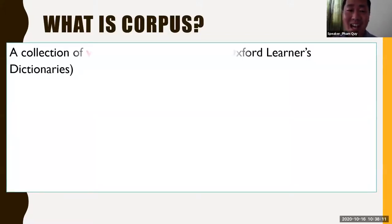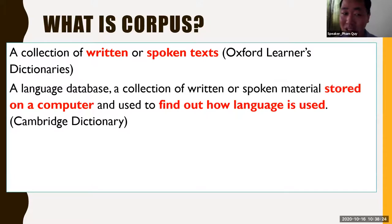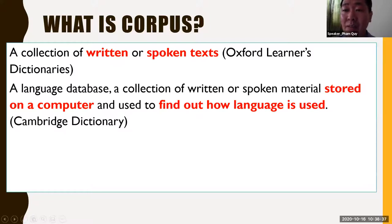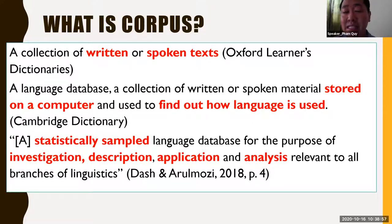What is a corpus? First, I want to present some dictionary definitions. According to a learner dictionary, a corpus is a collection of written or spoken text. A corpus can also be defined as a language database of a collection of written or spoken materials stored on a computer and used to find out how language is used. According to Dash and Rumorcy 2018, a corpus can be defined as a statistically sampled language database for the purpose of investigation, description, application, and analysis relevant to all branches of linguistics. Basically, a corpus is a collection of huge numbers of words that we can use to analyze patterns, design teaching materials, or do research.